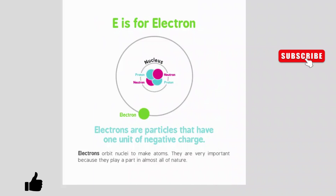E is for electron. Electrons are particles that have one unit of negative charge. Electrons orbit nuclei to make atoms.